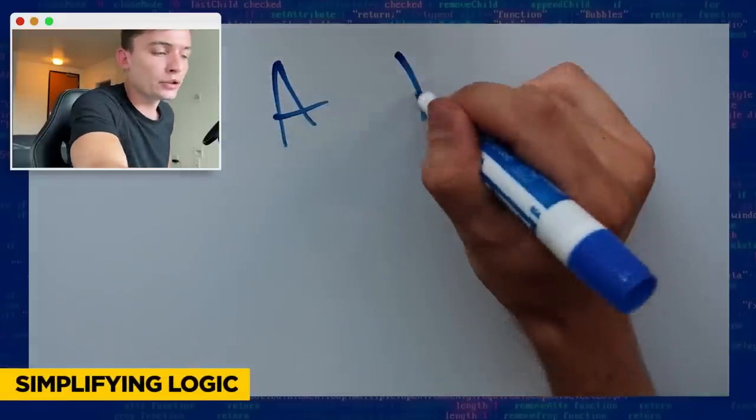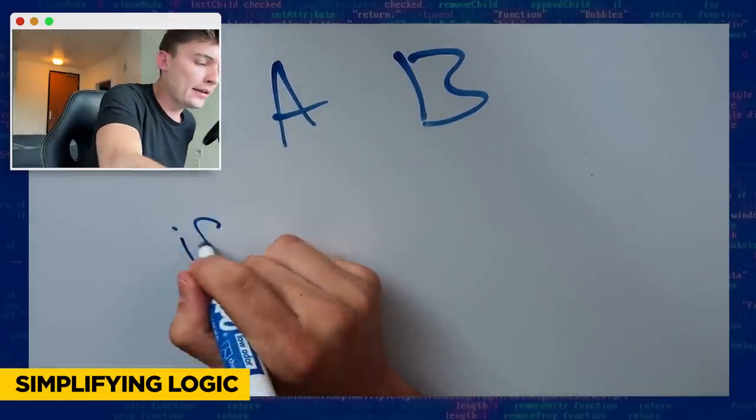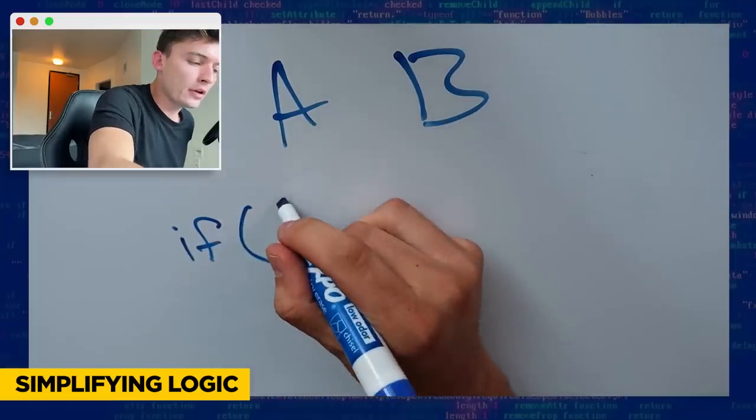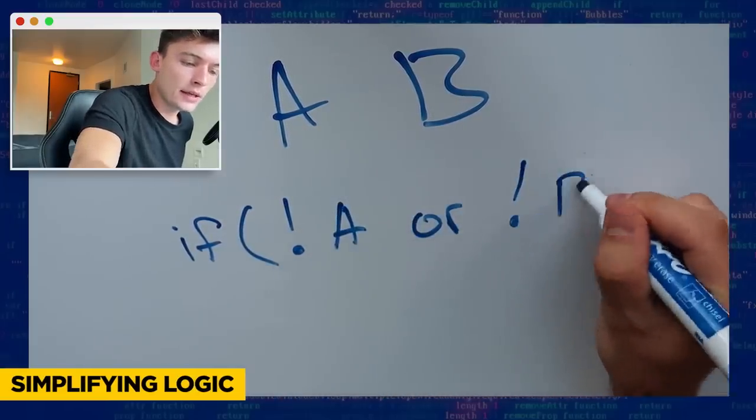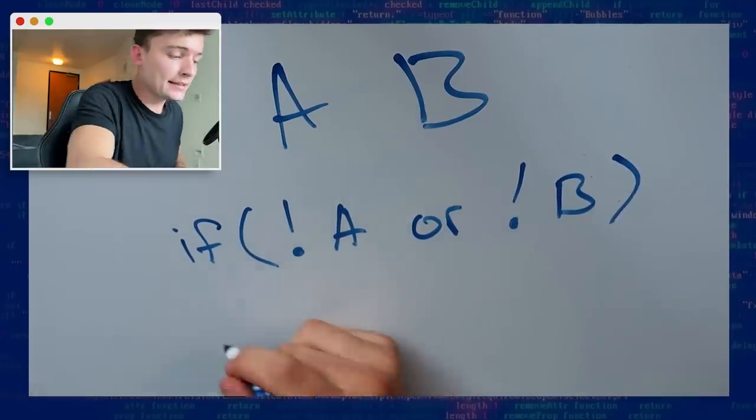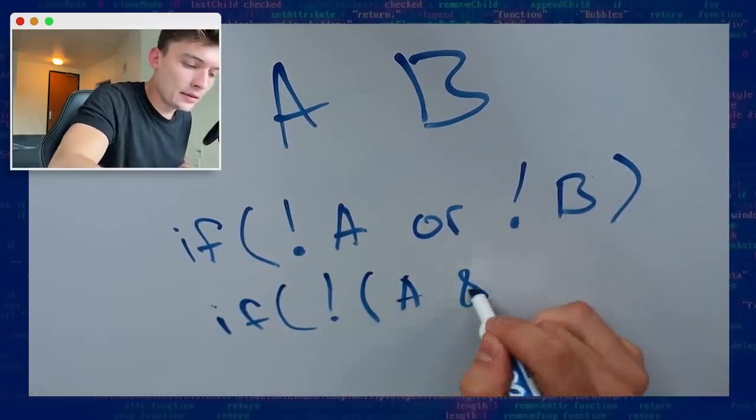If statements in some pretty cool ways. If you had A and B, which are both Boolean, so they either are true or they're false, and you had an if statement that was if not A or not B, this is actually the exact same thing as if not A and B.